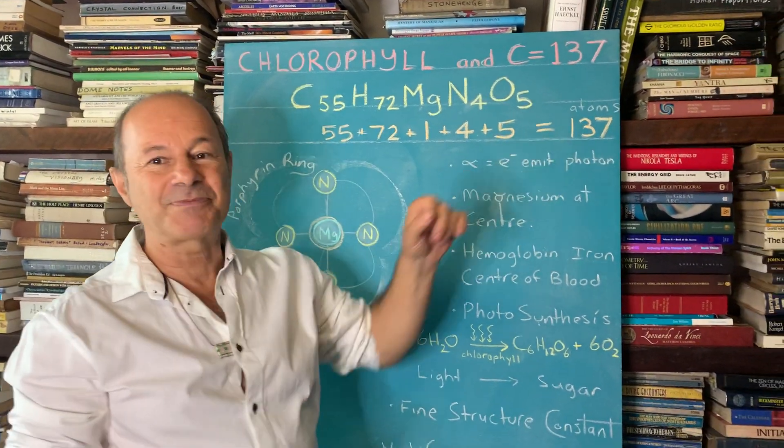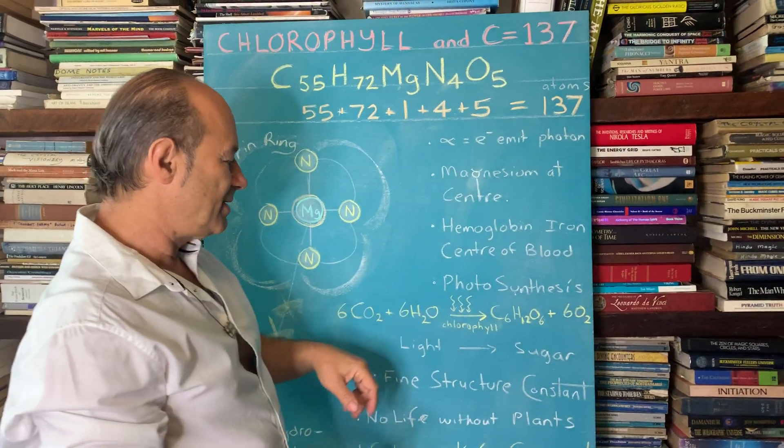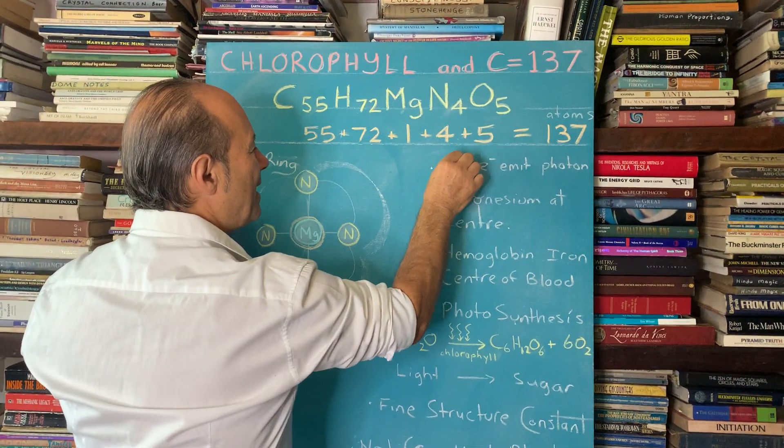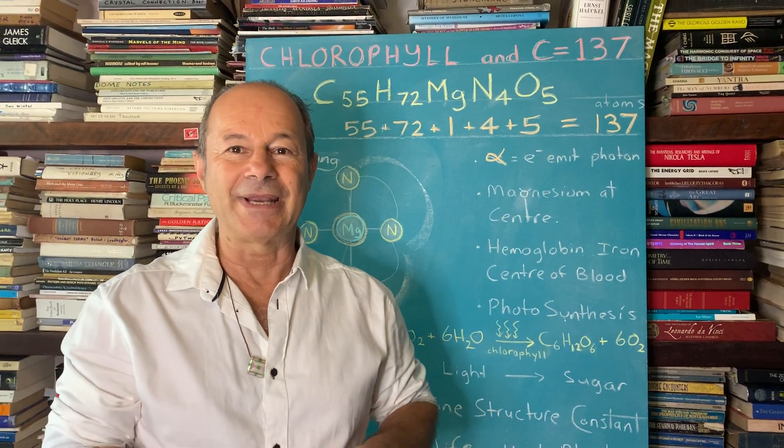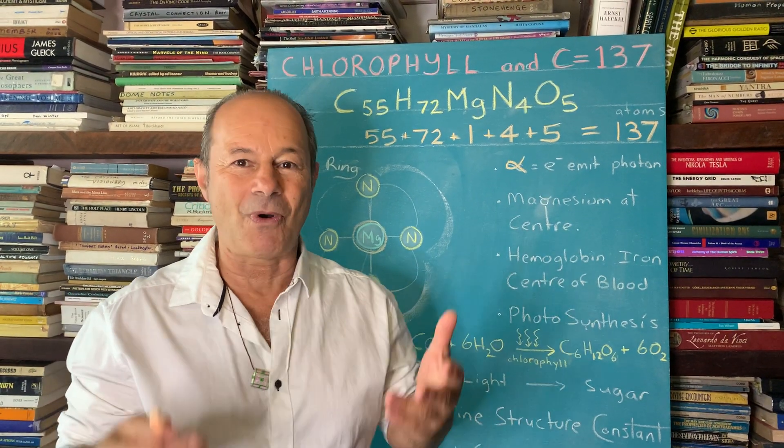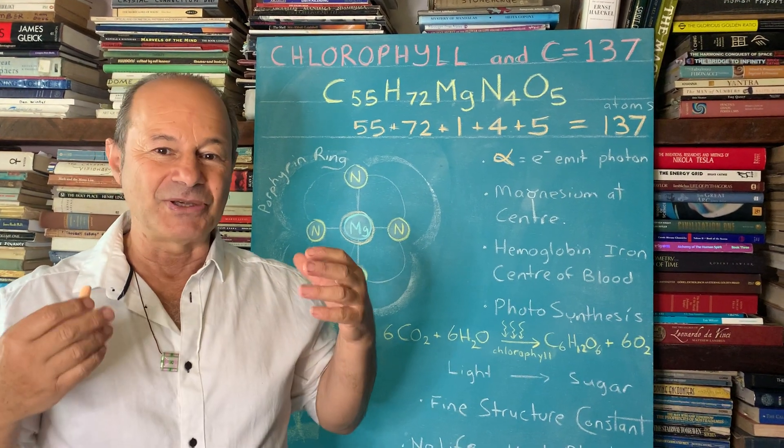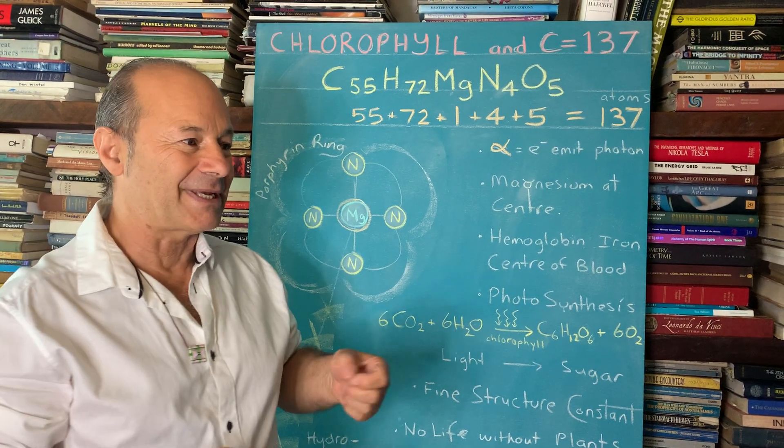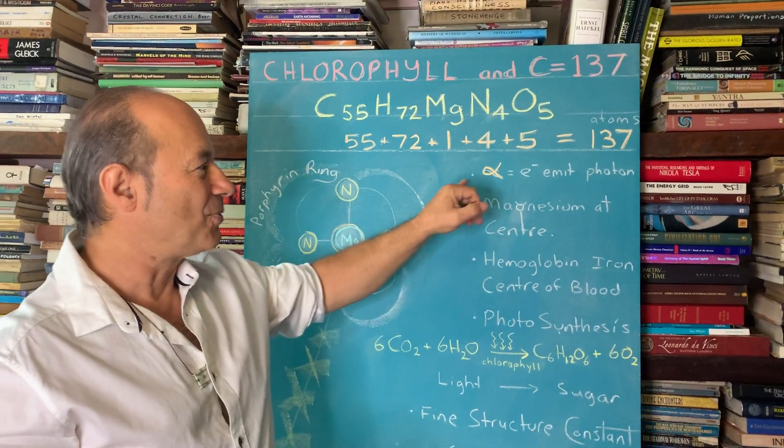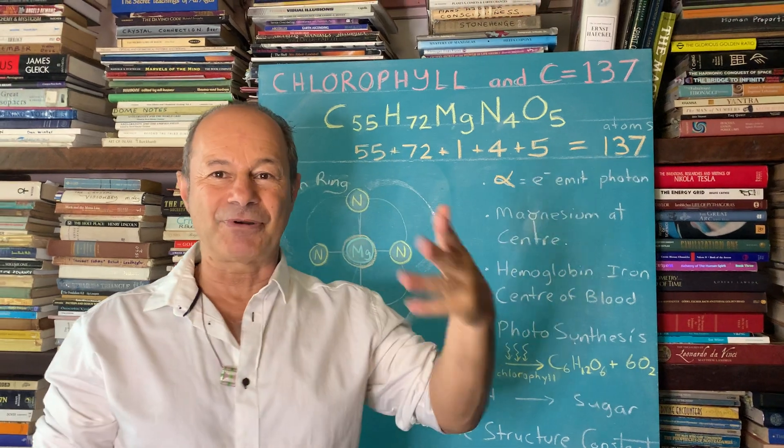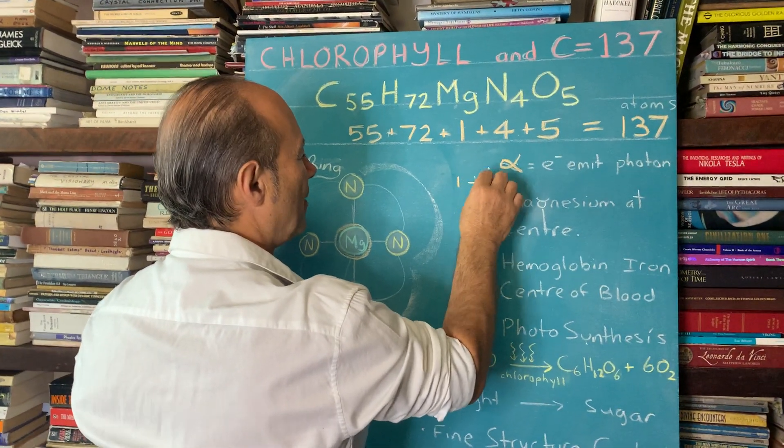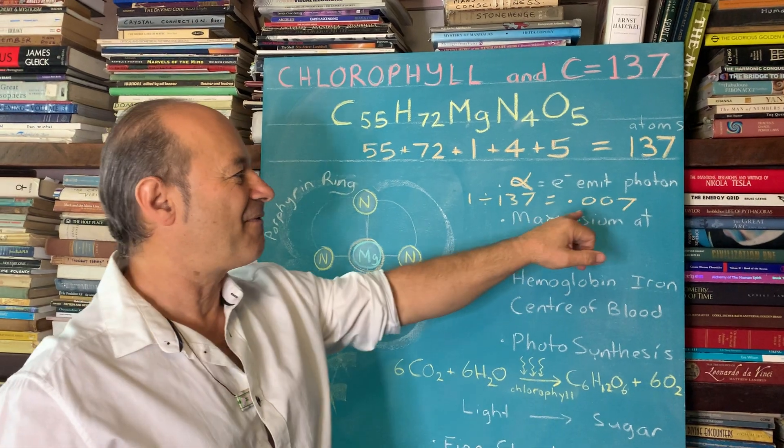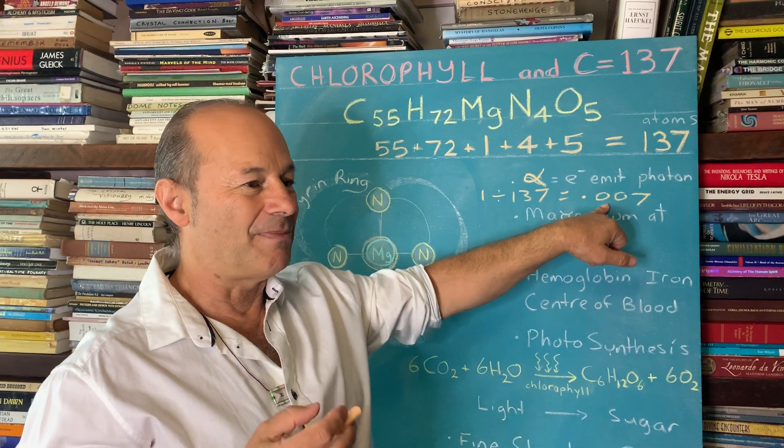We've done a few posts before where we talked about the fine structure constant. This fine structure constant is known as alpha. And alpha has got to do with how an electron emits a photon, how much energy is required at the Planck level. The Planck level is the quantum, the most smallest part of the physical world. And there's these amazingly deep formulas that Einstein and Richard Feynman put together. And it was all about not 137, but the reciprocal of 137. So when we say 1 divided by 137 on your calculator, it equals 0.007. And it's got to do with the fabric of creation at the most minuscule level, the microcosmic level.